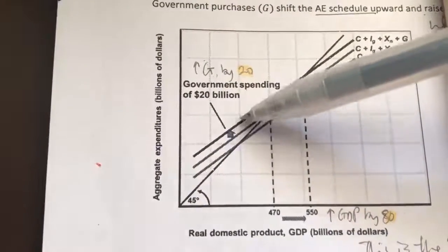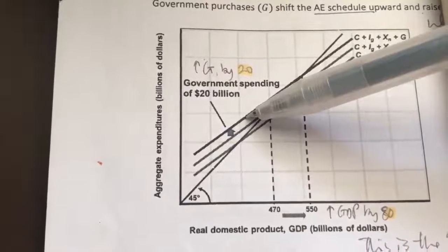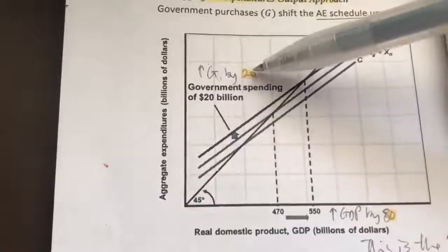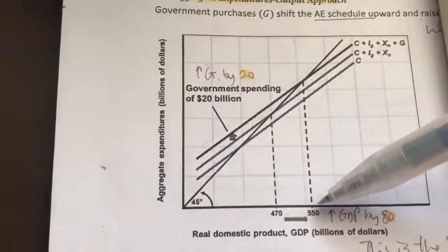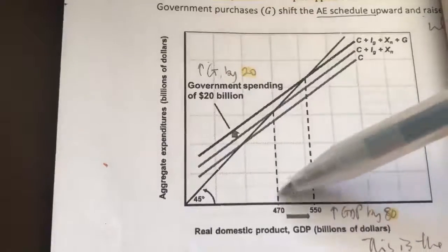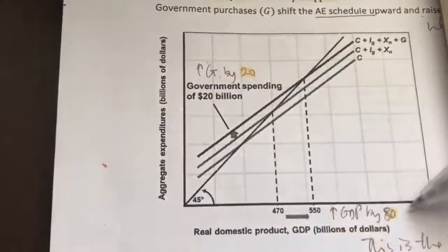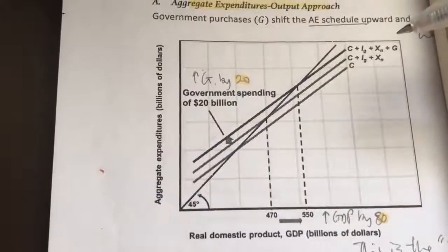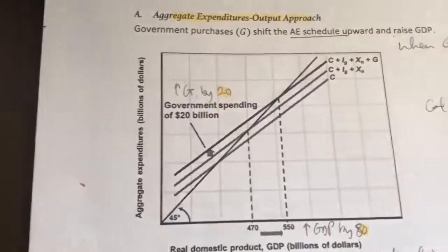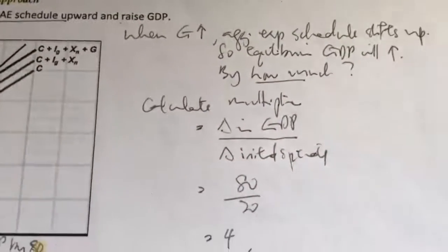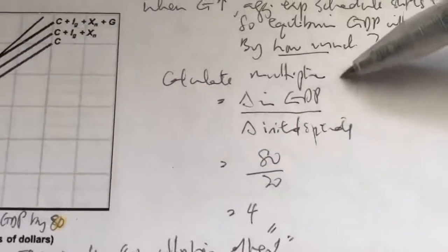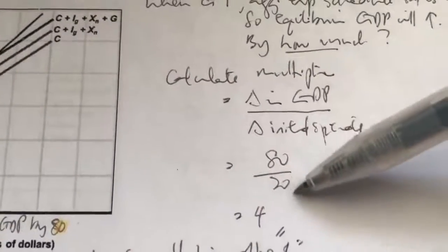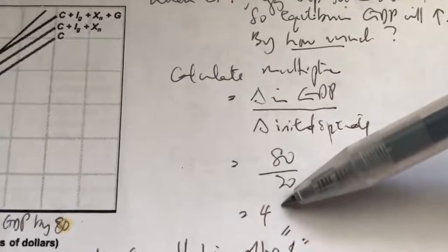When there's an initial change in spending — in this case G increases by 20 billion — the effect is a much larger change in real GDP of 80 billion. To calculate the multiplier, apply the formula: change in GDP over change in initial spending. That's 80 billion over 20 billion, so the multiplier is 4.